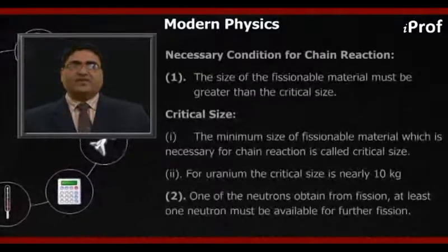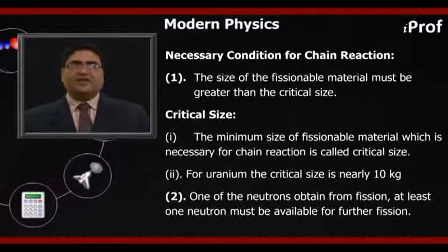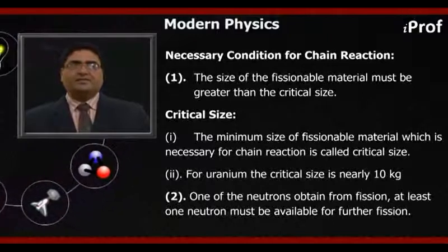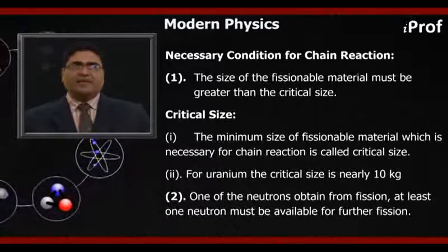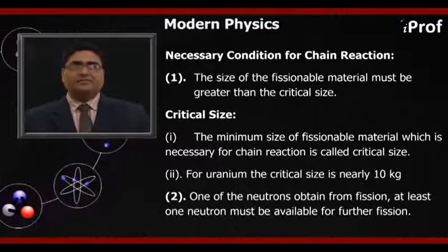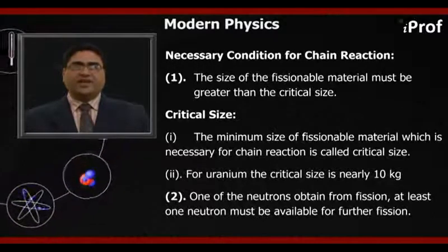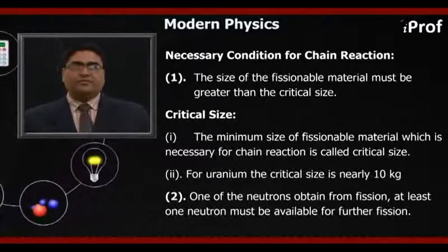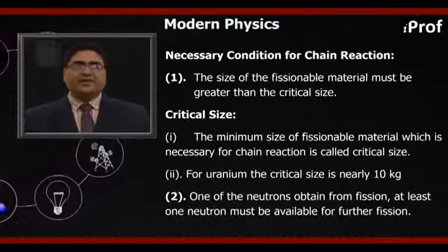Necessary conditions for chain reaction: First, the size of the fissile material must be greater than the critical size. What is critical size? The minimum size or mass of the fissile material which is necessary for chain reaction is known as critical size or critical mass. For uranium, the critical size is nearly 10 kg.